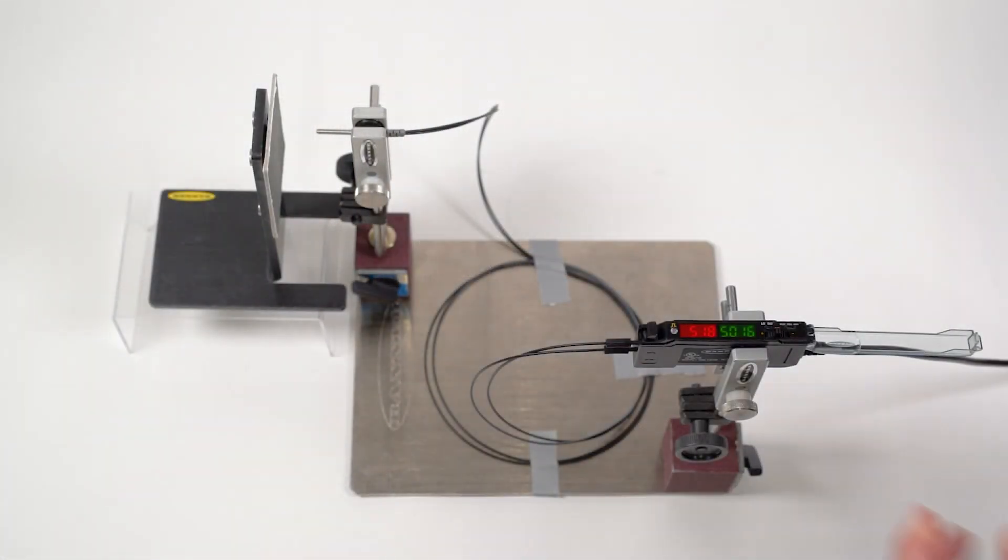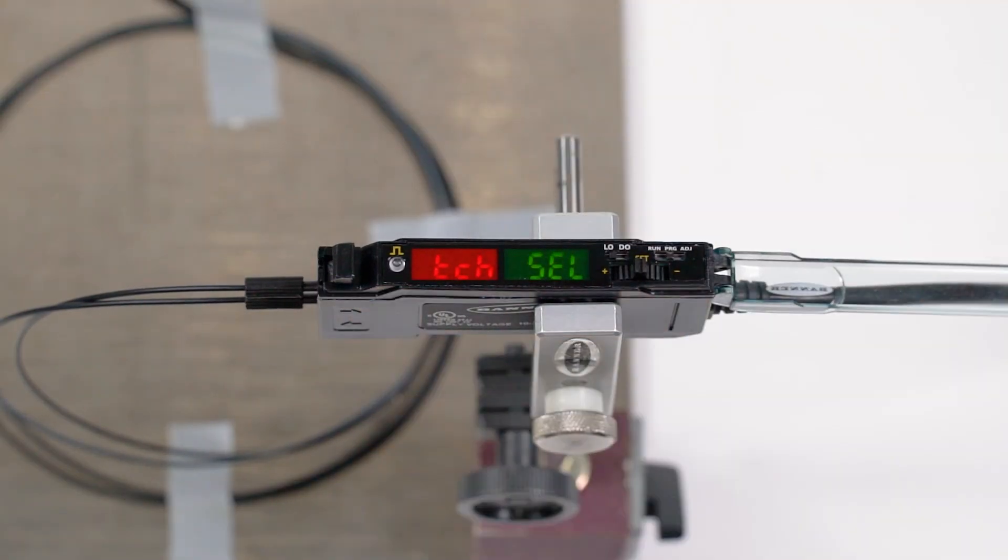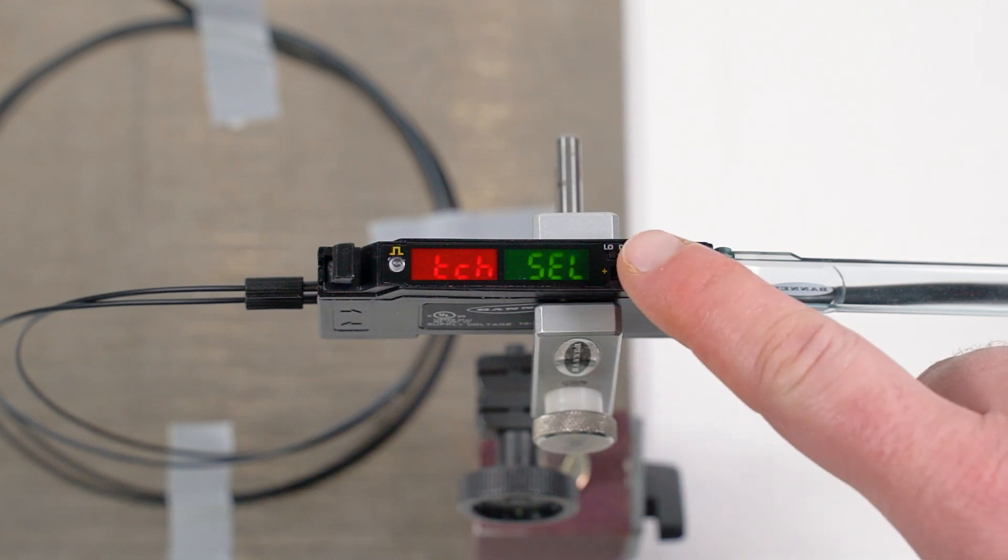To begin, move the mode switch to PRG to access the program mode menu. Use the rocker button to toggle between options until you see the teach selection option and press down on the button.